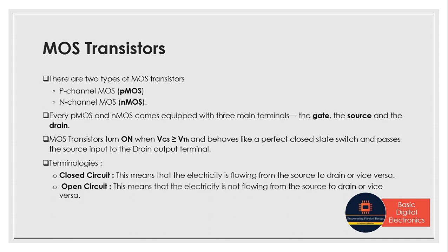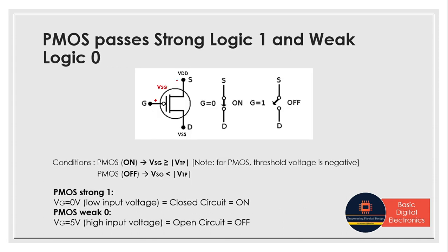Before starting the discussion, we must be aware of two main terminologies: closed circuit and open circuit. A closed circuit forms only when electricity is flowing from source to drain terminal or vice versa, whereas open circuit means there is no electricity flowing between the source and drain terminal — that means there is no connection between source and drain. Now let's see how PMOS passes strong logic 1 and weak logic 0.